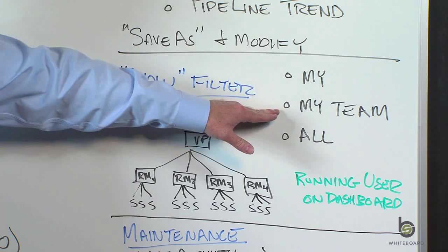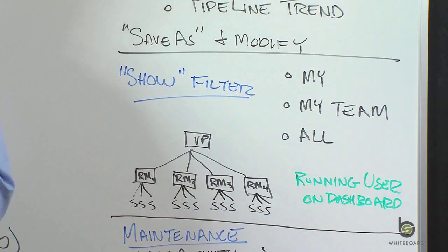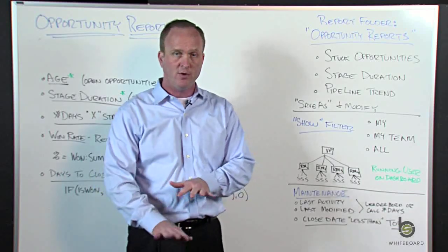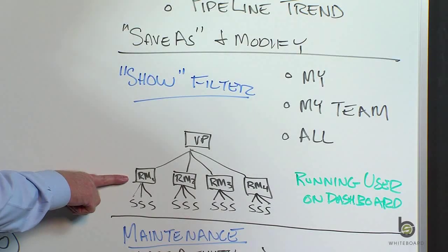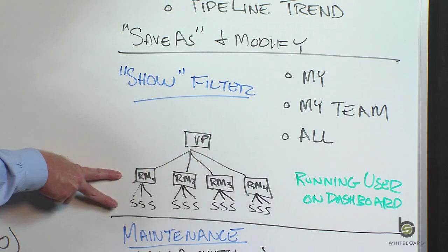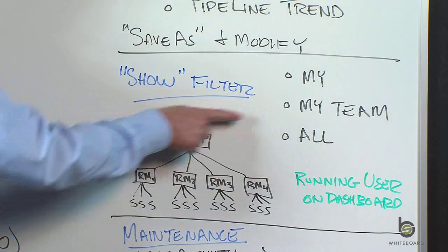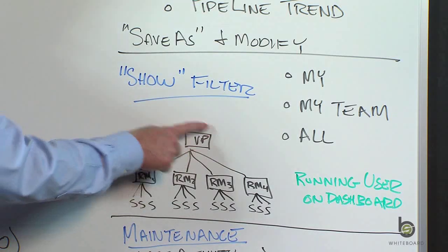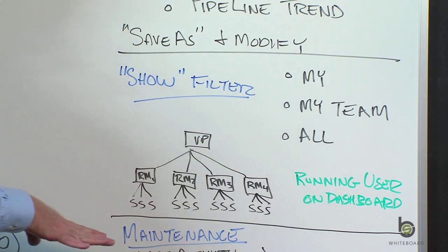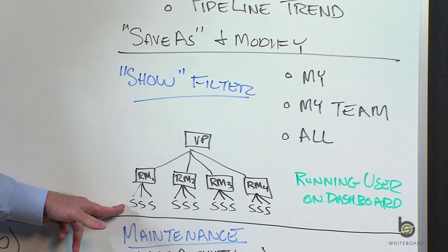If you change that report to My Team, the data changes dramatically — because now you're grabbing all the records that you own, plus all the records owned by your subordinates below you in the role hierarchy. So if a regional manager runs a report with the My Team filter, they're going to see the opportunities they own plus all the records owned by the folks below them.